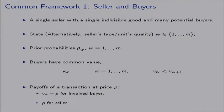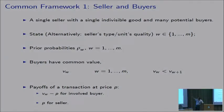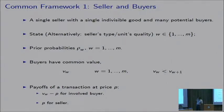Let's go to the model. The common framework is a single seller with a single indivisible good and many potential buyers. The state is denoted by W — think of it as the unit's quality or the seller's type. The state W takes a finite number of possible values, one through n, with prior probabilities row of W. Buyers have common value: they all value the good at V_W, where this valuation depends on the state and is increasing in the state.